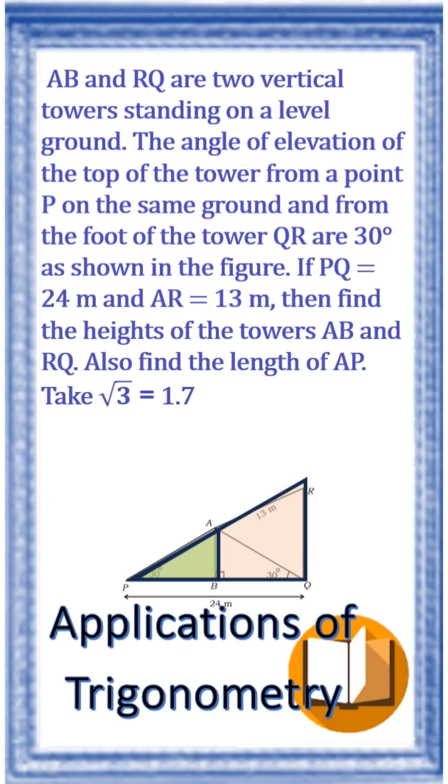If PQ is equal to 24 m and AR is equal to 13 meter, then find the heights of the towers AB and RQ. Also find the length of AP. Take root 3 is equal to 1.7.